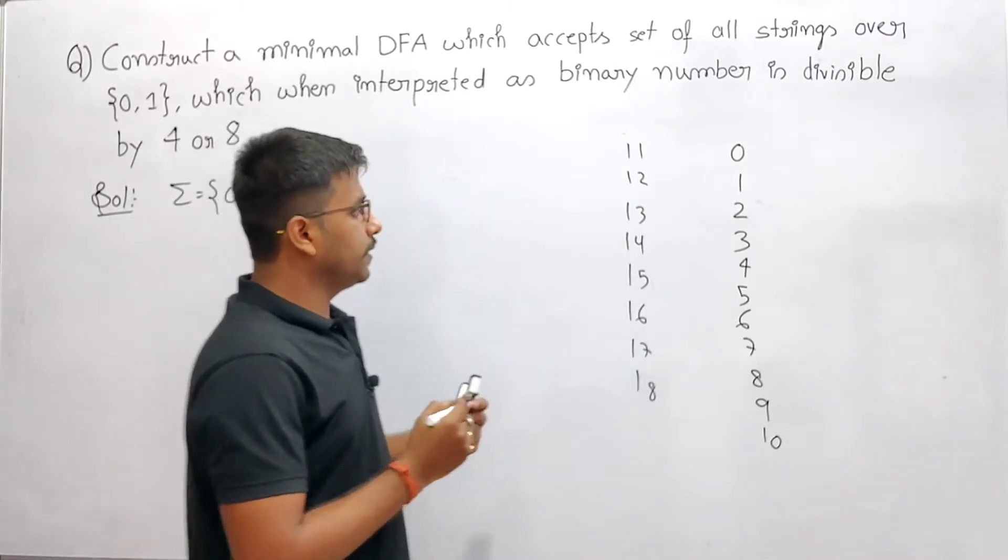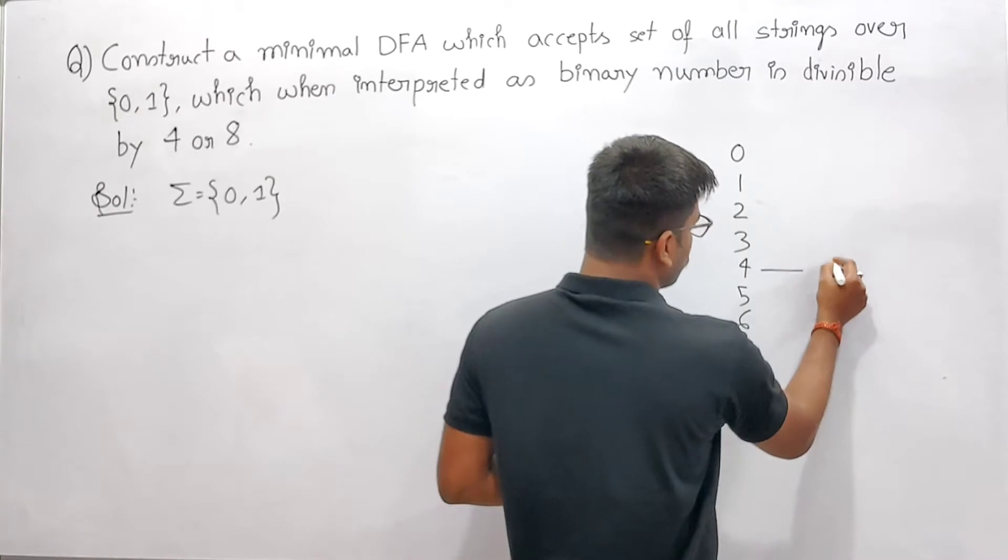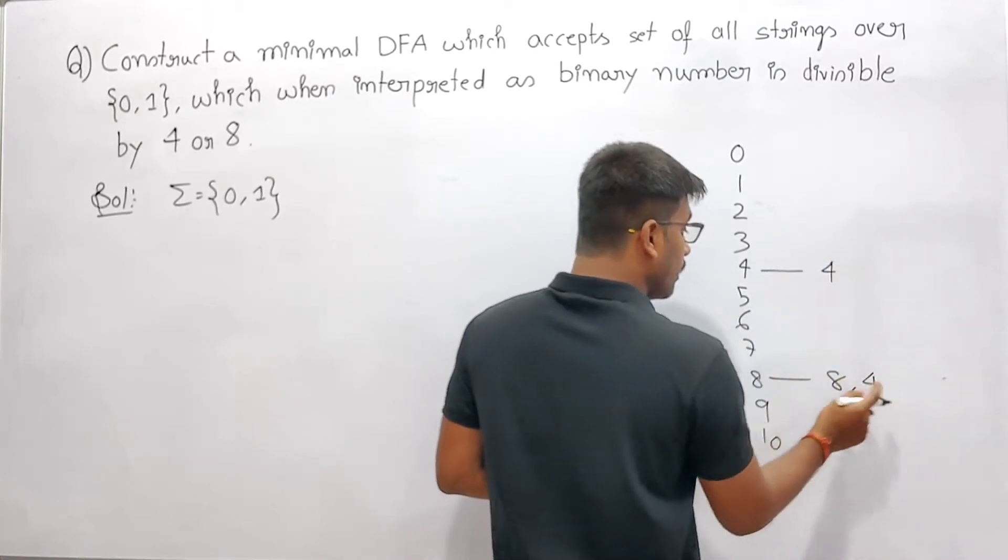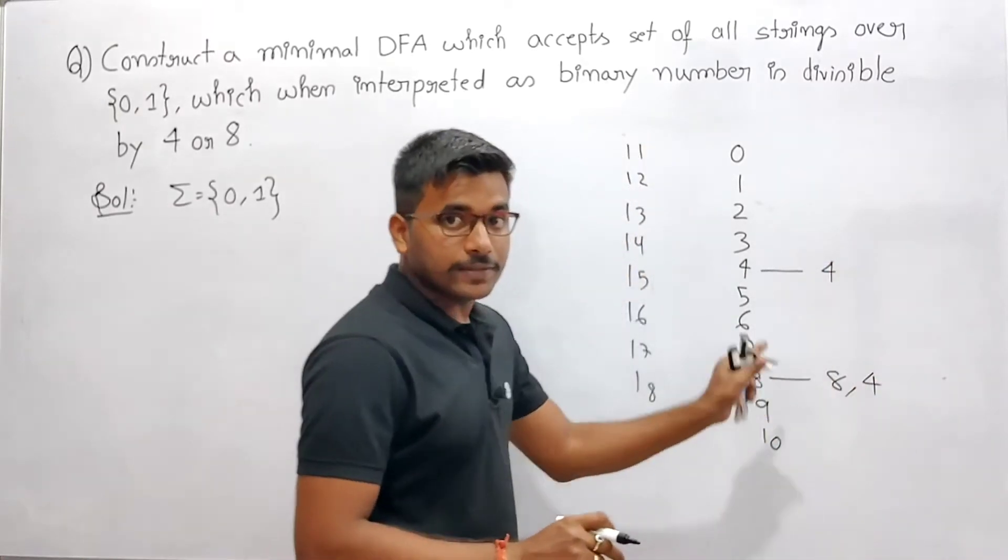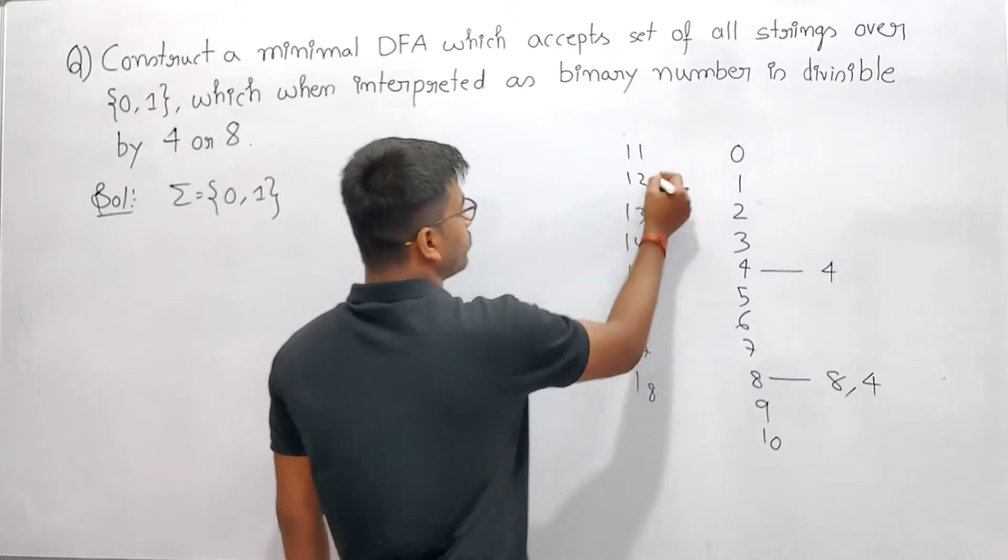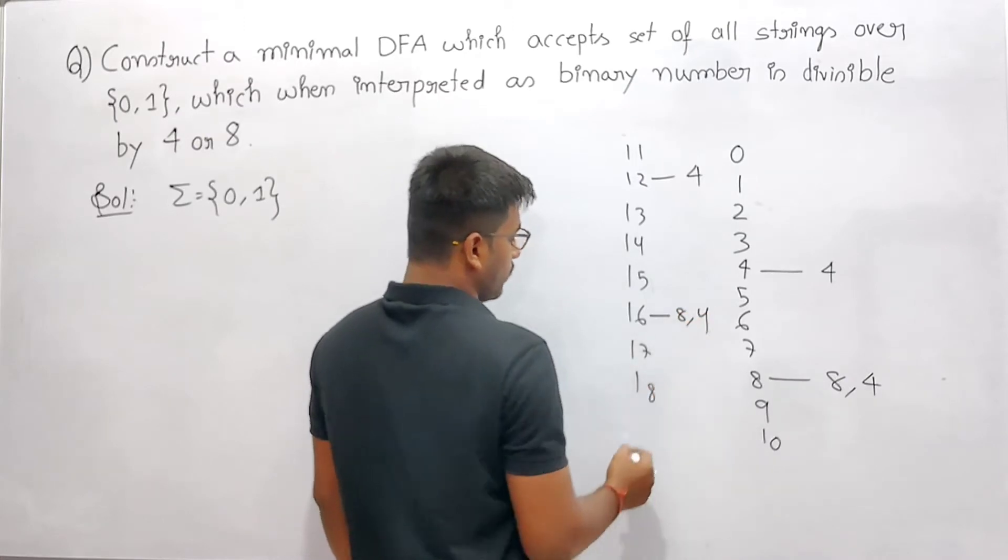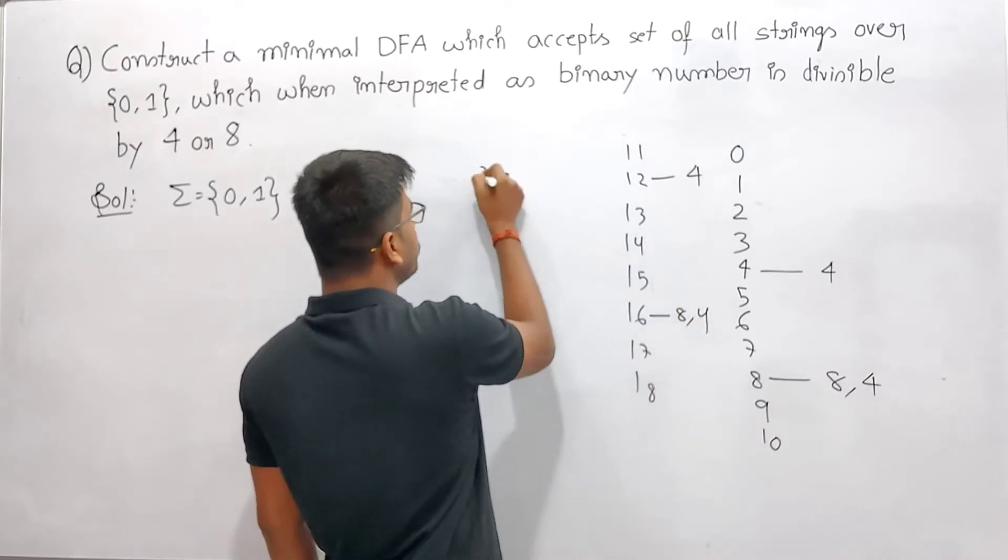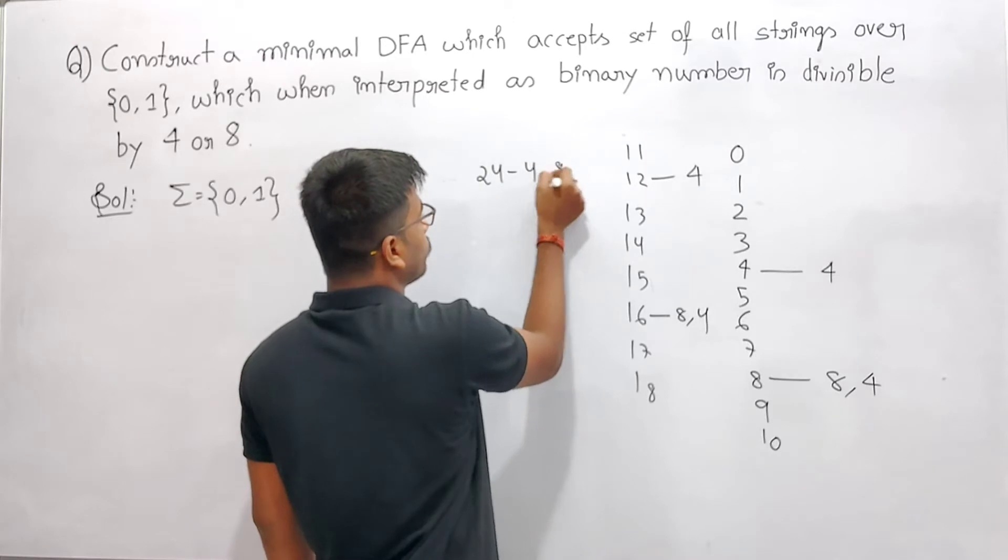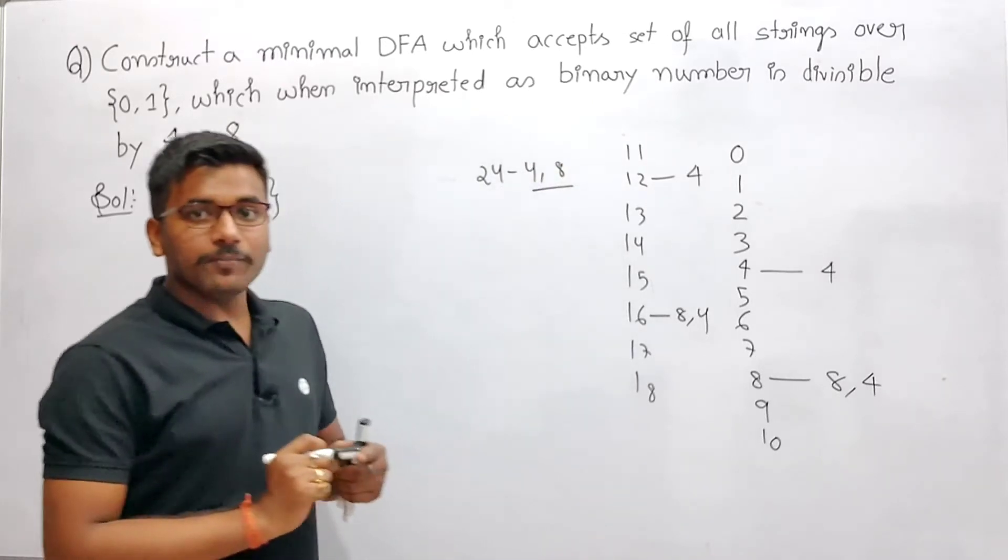Now see: 4 is divisible by 4. 8 is divisible by both 8 as well as 4. Now 12 is divisible by 4, 16 is divisible by both.